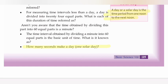1 hour is equal to 24. 1 hour is equal to 60 minutes. 1 minute is equal to 60 seconds. 1 day is equal to 24 hours. 1 hour is equal to 60 minutes.